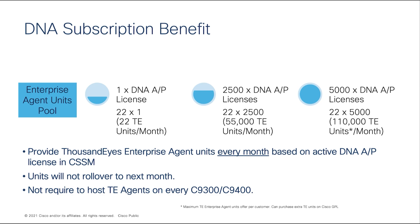Cisco provides ThousandEyes Enterprise agent units every month based on active DNA Advantage or Premier licenses in your CSSM. Units are credited every month and will not roll over if you are not using them. One important thing to note: you do not need to deploy the ThousandEyes Enterprise agent on every 9300 or 9400 switch. You just need to deploy it on one or two switches where applicable for your network, and consume ThousandEyes units from the pool. The more Advantage or Premier licenses you have, the more credit you can get and use in your tests.